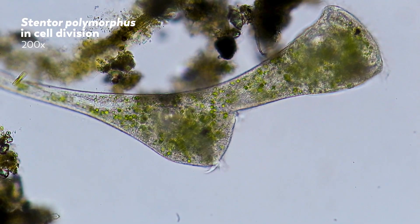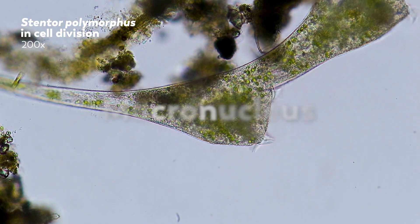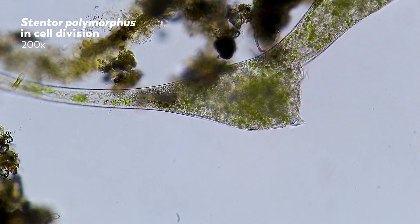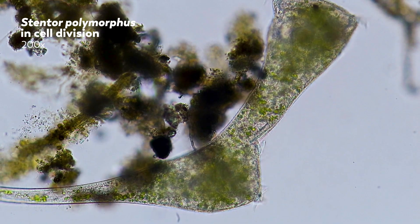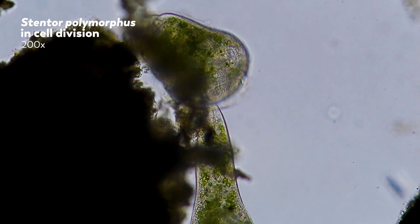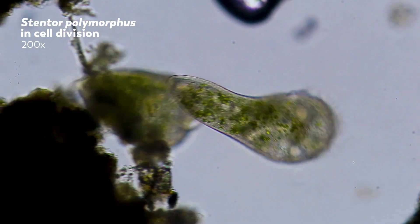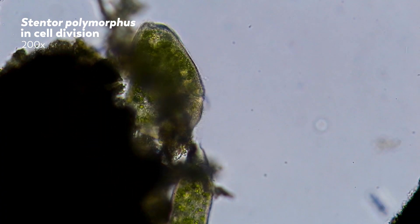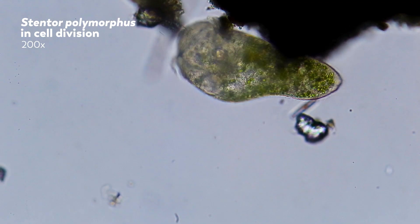Ciliates like paramecium and stentor actually have two types of nuclei: a macronucleus and a micronucleus. The macronucleus controls the non-reproductive cell functions like eating, movement, and digestion, and the micronucleus is necessary for reproduction. These nuclei actually divide differently during reproduction, and for certain ciliates the micronucleus plays a truly bizarre role. But to talk about that, we need to move away from asexual reproduction.